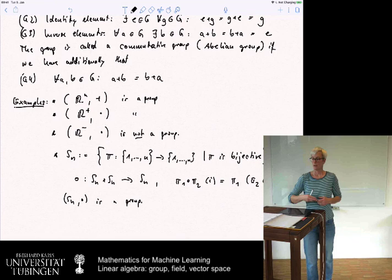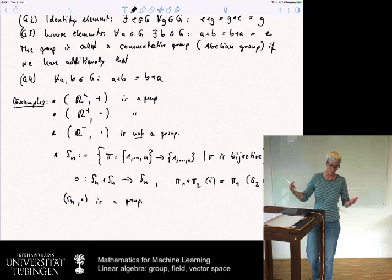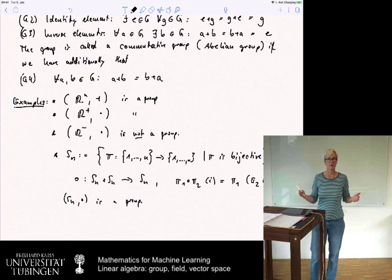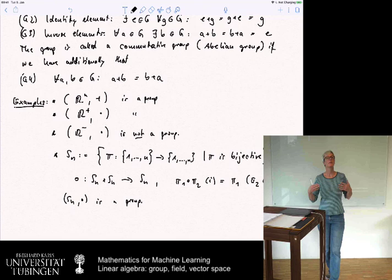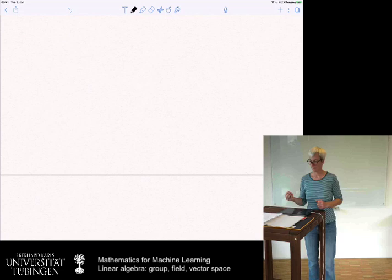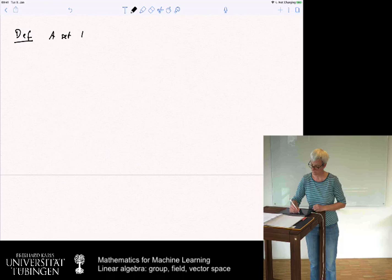Now we've seen what a group is. This is one ingredient we need to define vector spaces. The other ingredient we need is scalar multiplication, and scalars come from a field. So we need to know what a field is.